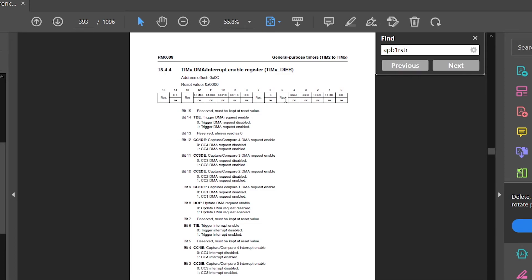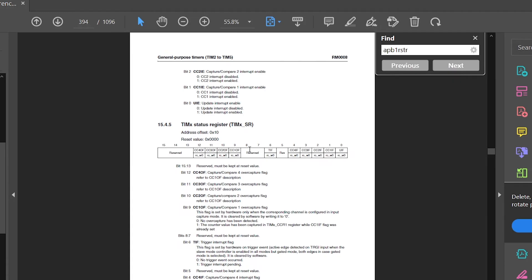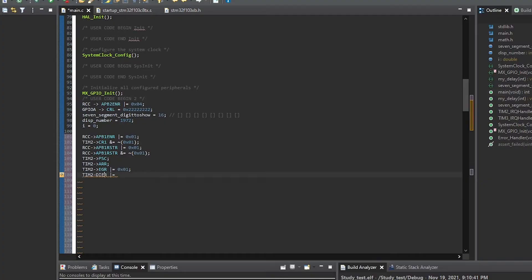Next register is the event generation register which will allow us to reinitialize our counter every time overflow occurs. So, here we will need bit zero again. Then we have to enable interrupt for this timer. Again, bit zero which is update interrupt enable. So let's write it down pretty quick. And I think we can finally enable our timer by writing one into CR1 register.